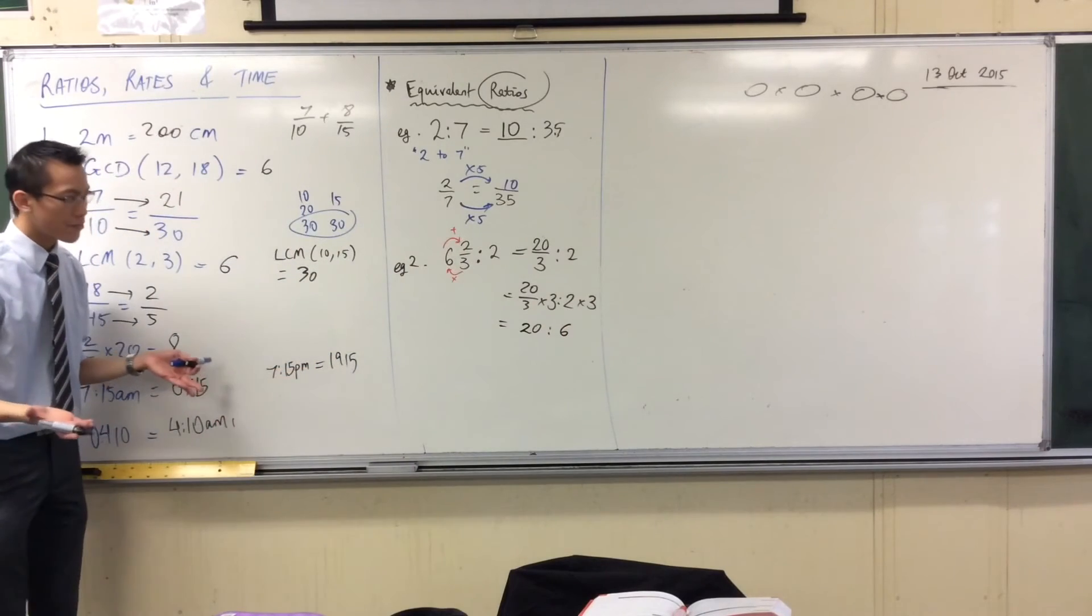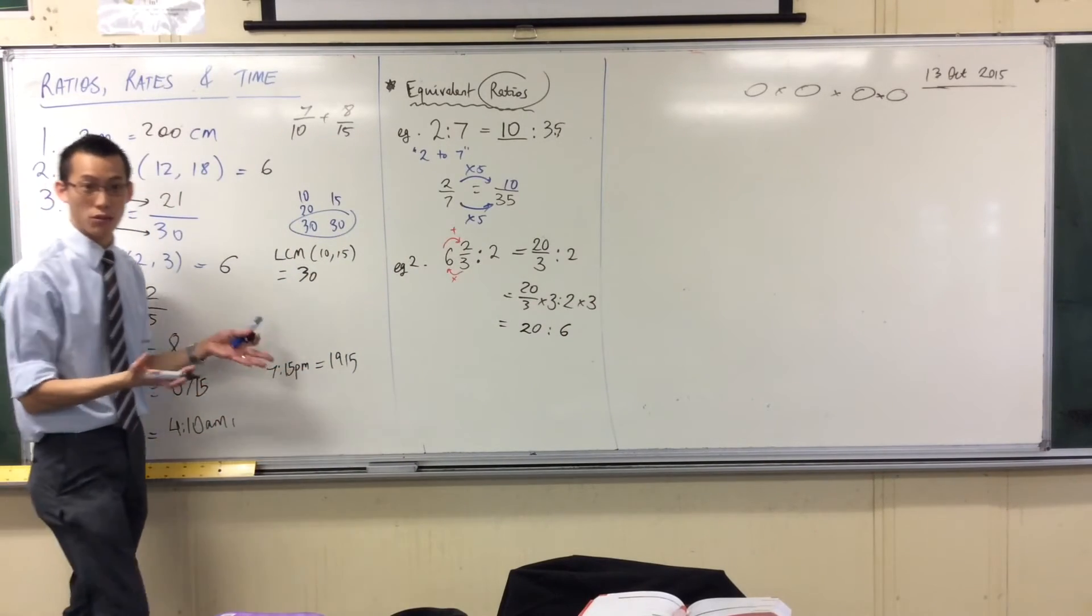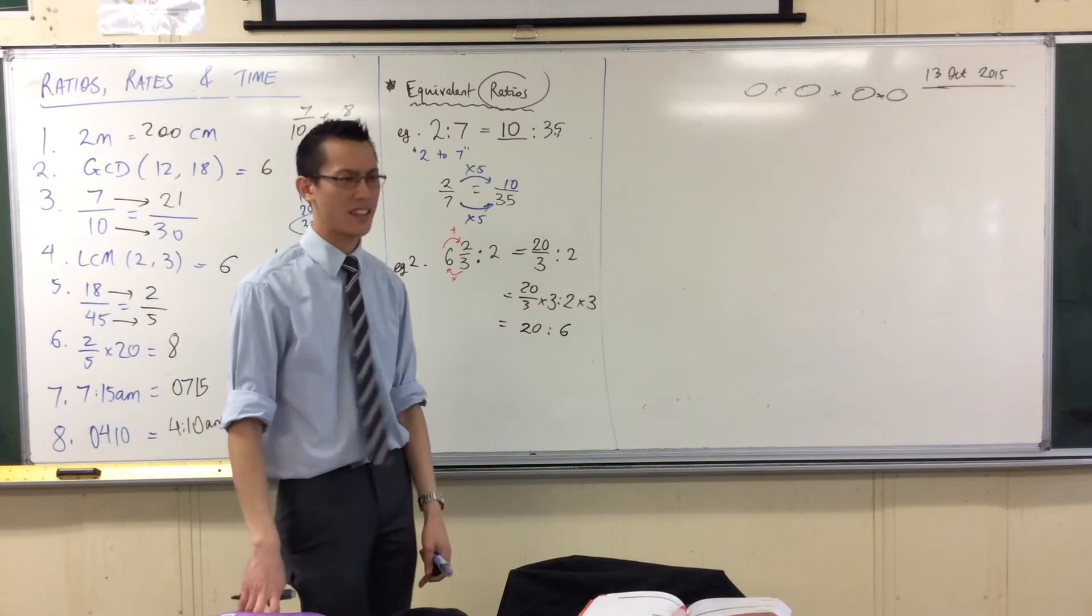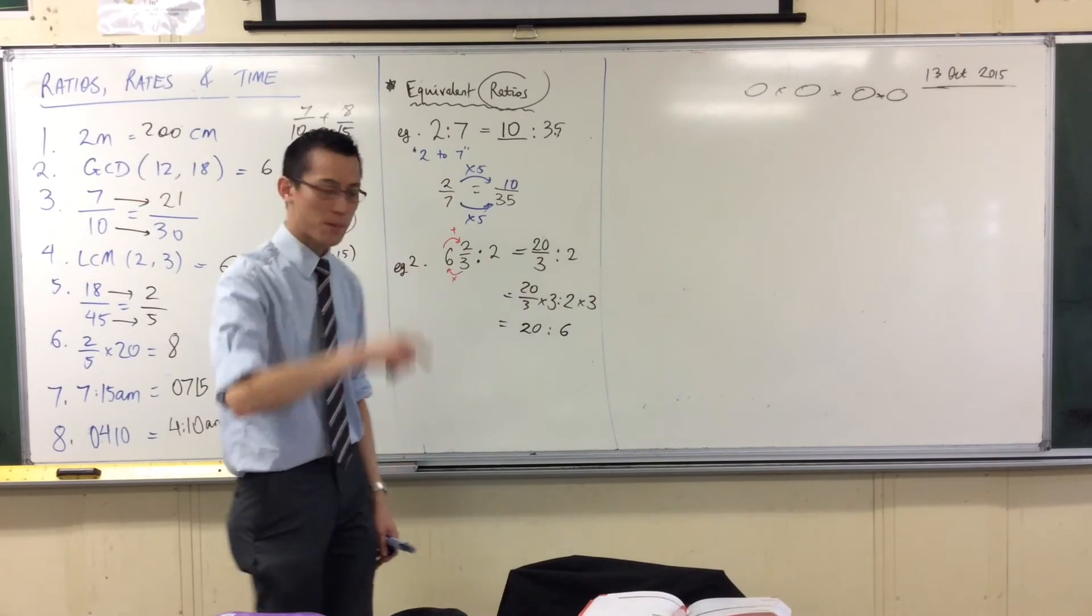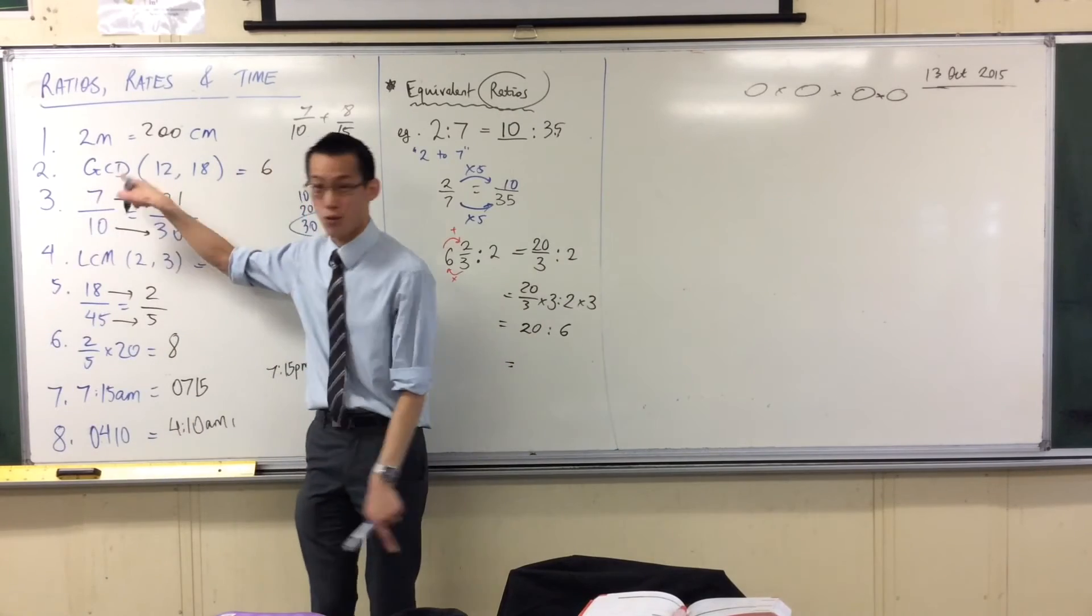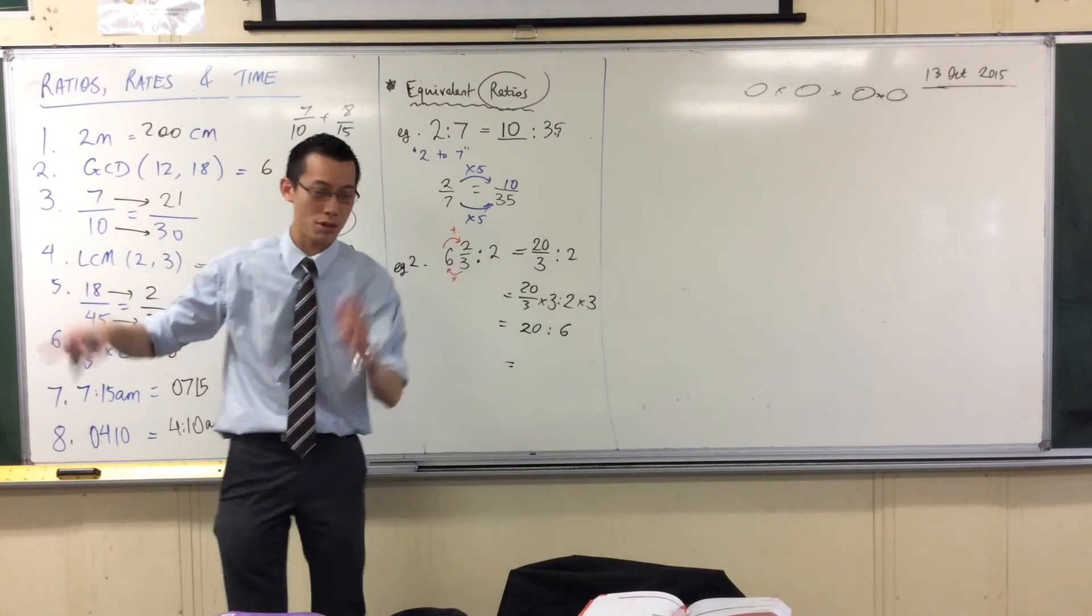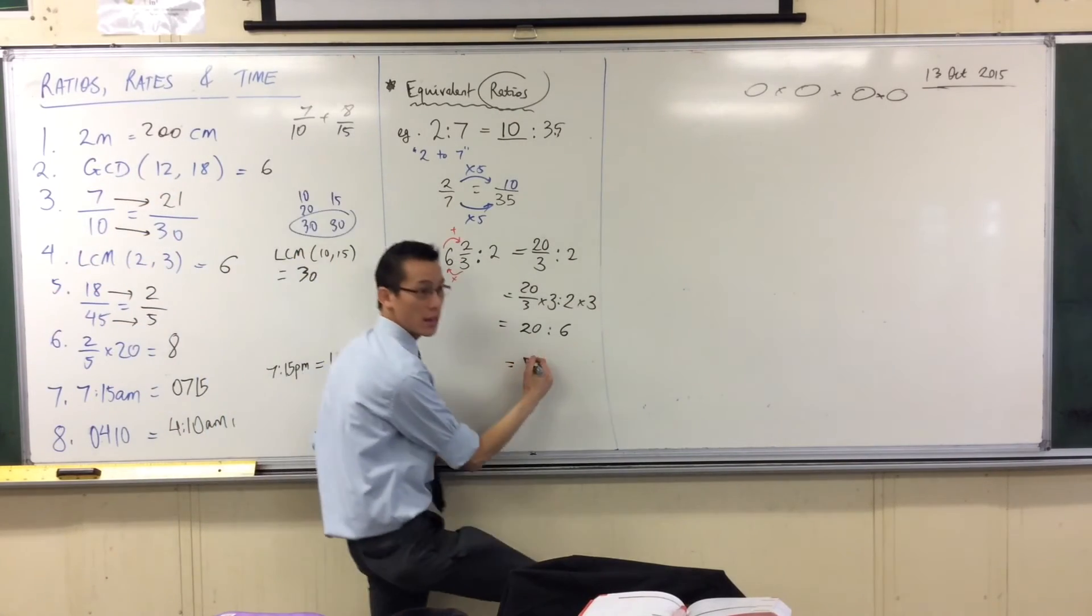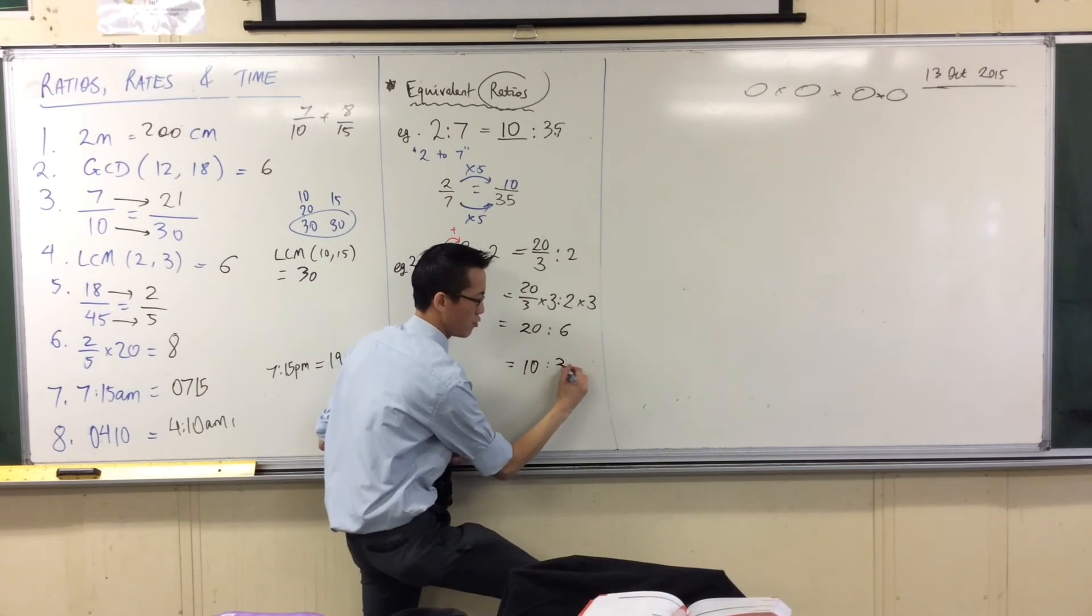Okay now that's better. It's all whole numbers but I can do even better than that. Can't I? Simplify it. I can simplify further because these two have a greatest common divisor of 2. So I'll divide through which gives me 10 and 3. 10 to 3.